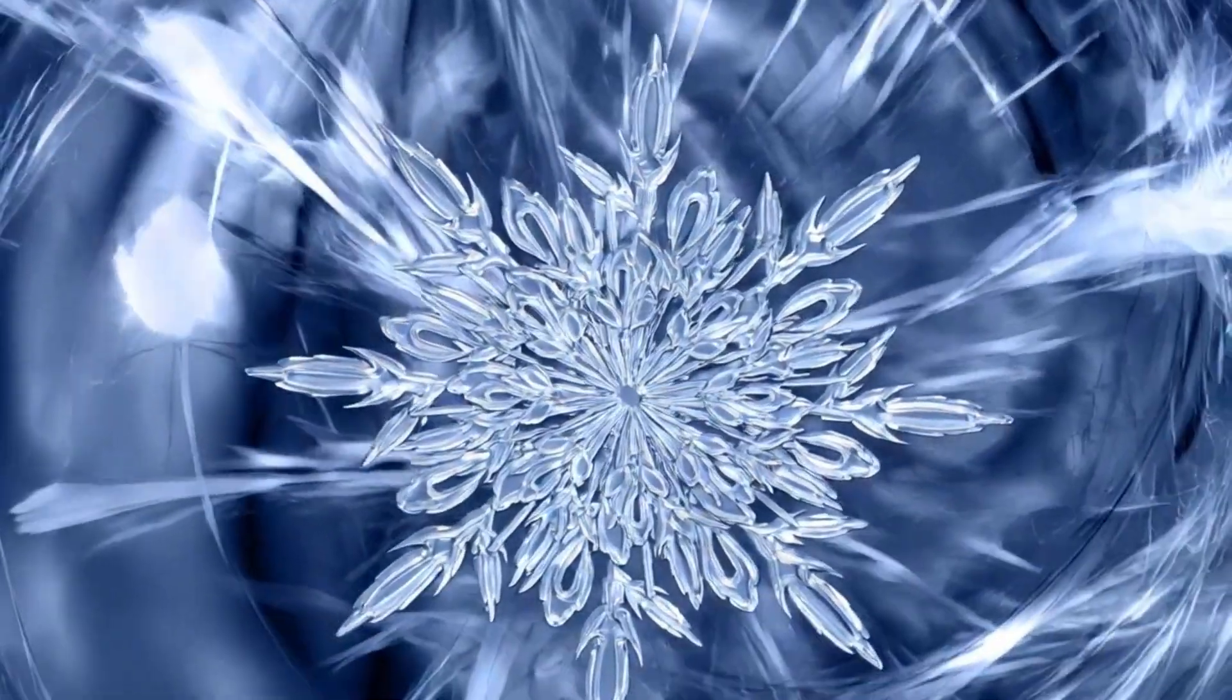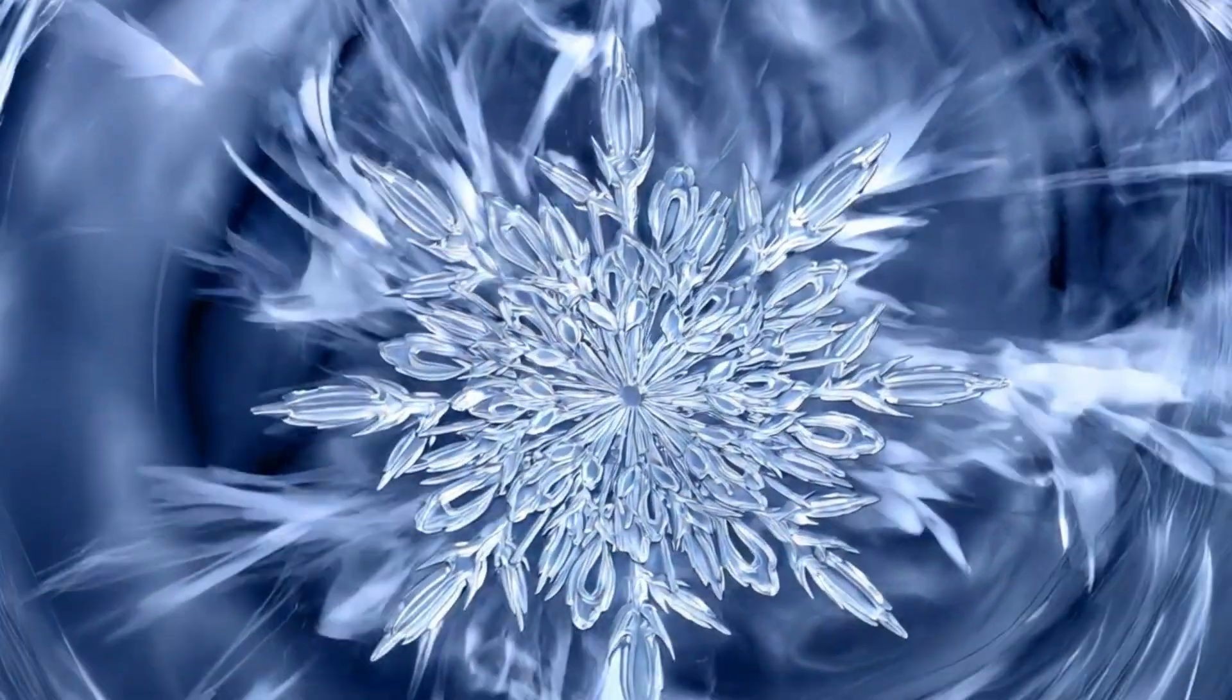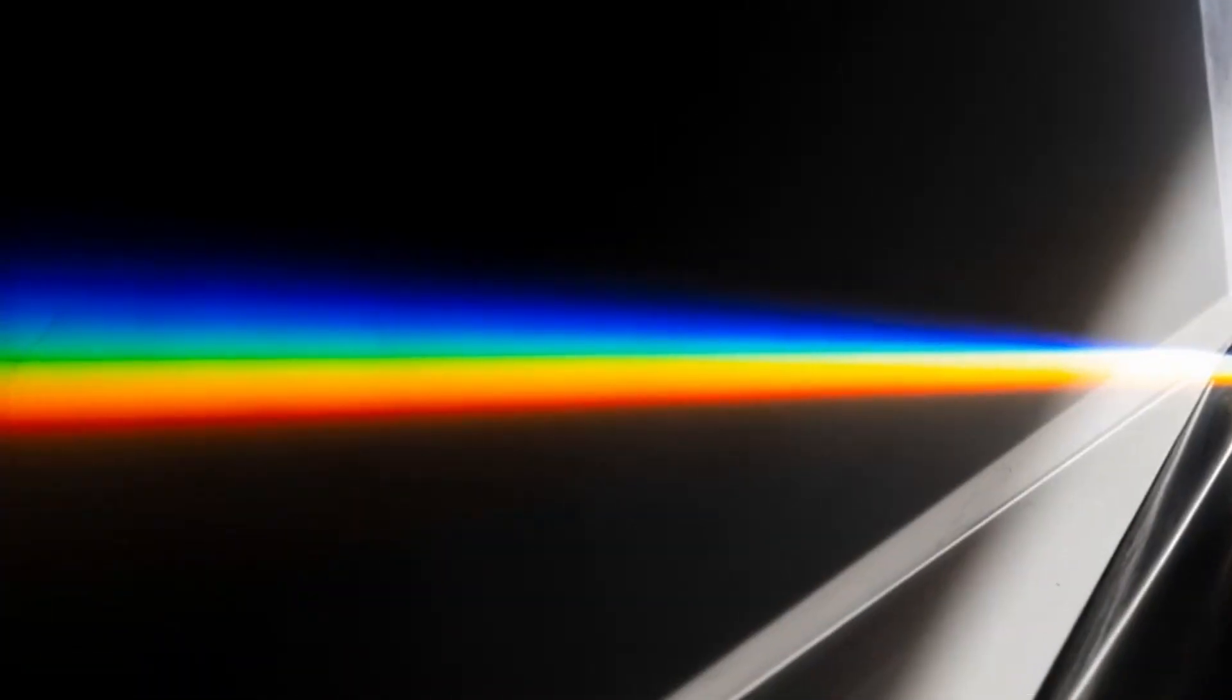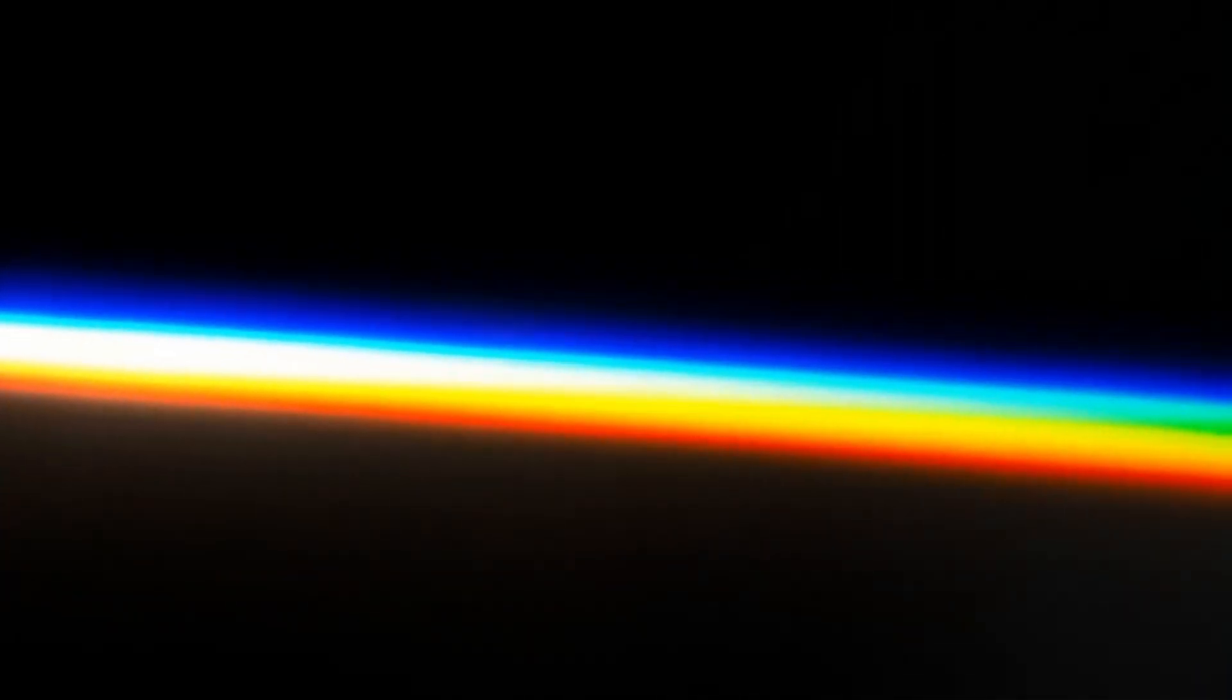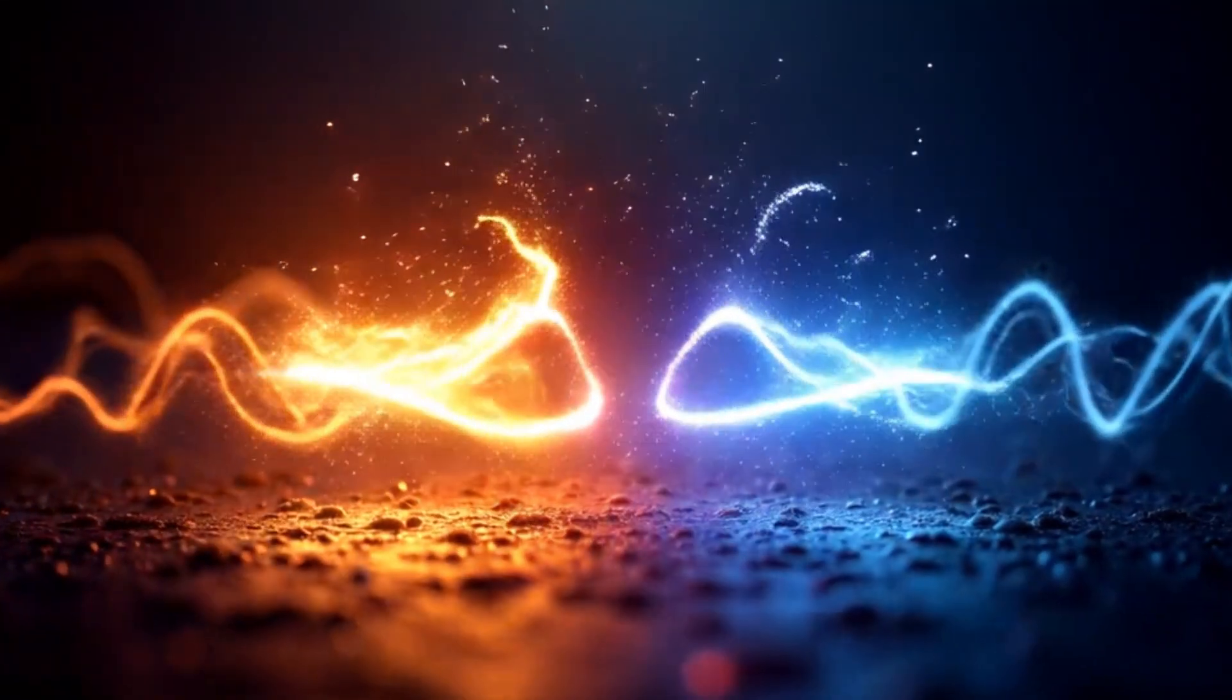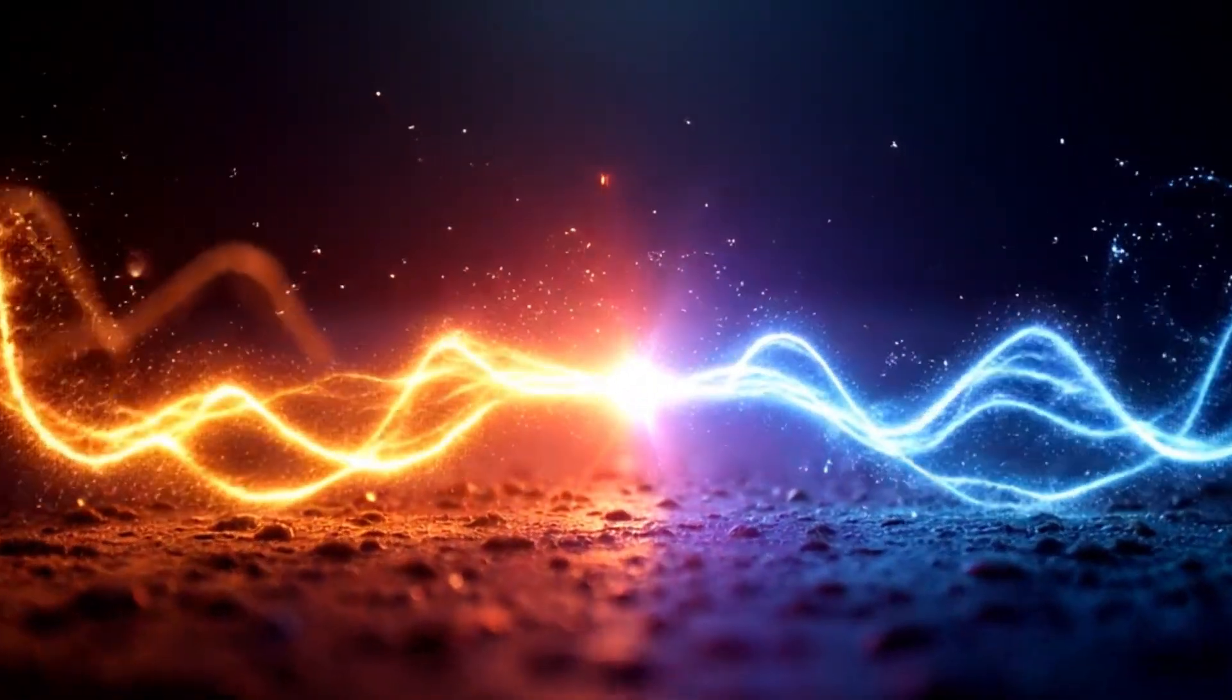Now, it was time to shine the light, literally. They bathed the crystal in circularly polarized light. That means light that spins in a corkscrew pattern, either right-handed or left-handed. In a symmetrical material, both kinds of light should produce the same response. But as they began to measure the photocurrent generated by the light, something unexpected happened.